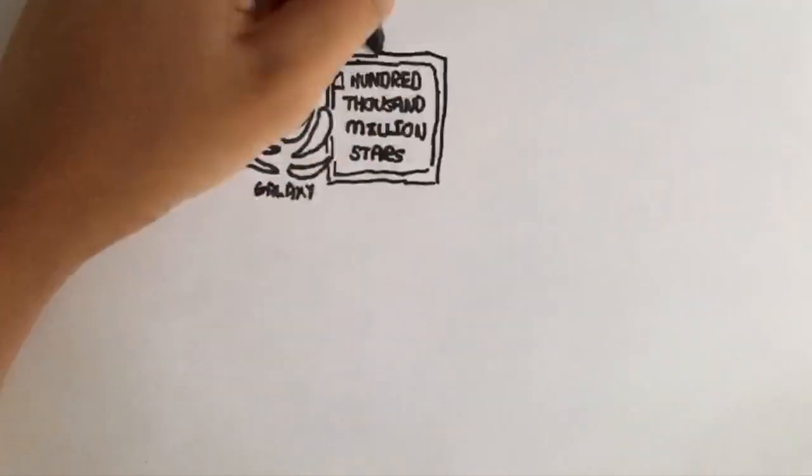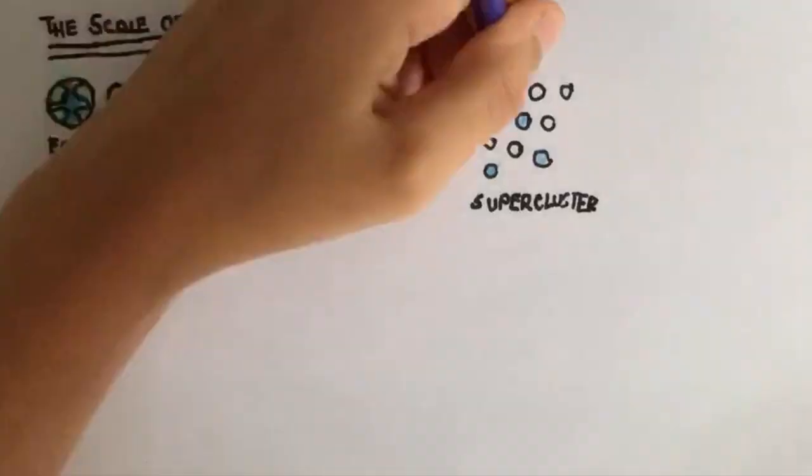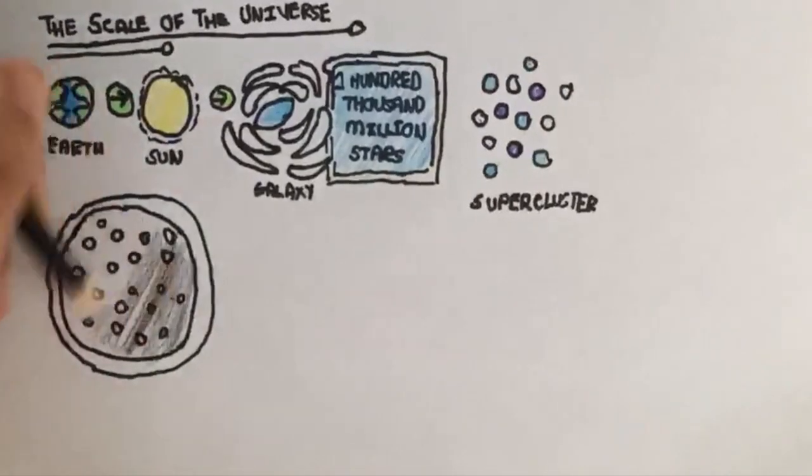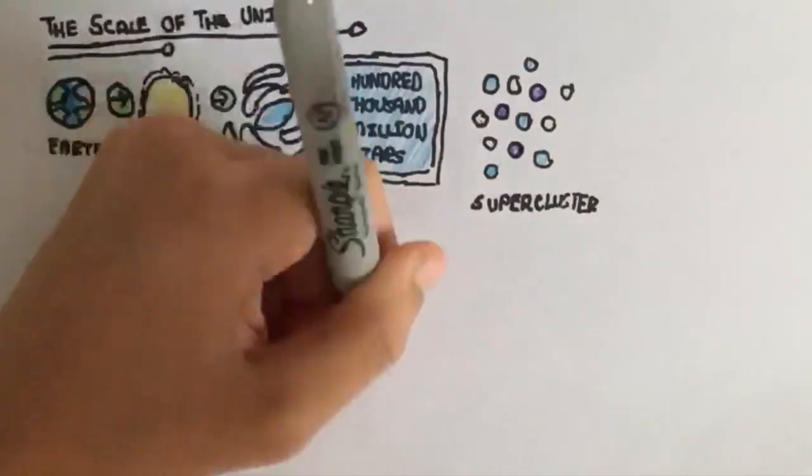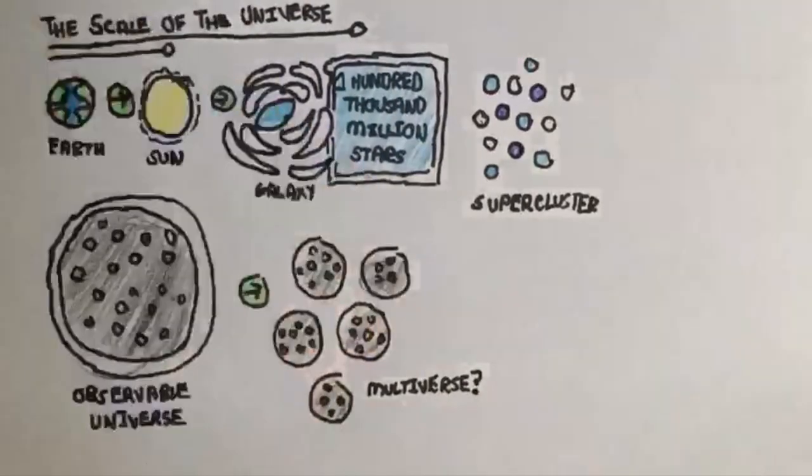Yet this galaxy is just one of many in our supercluster, and this supercluster is one of millions in the observable universe. And the universe itself could be billions of times larger, but it gets even more mind-bogglingly large. This universe may be solely one of potentially infinite universes. This would be the multiverse.